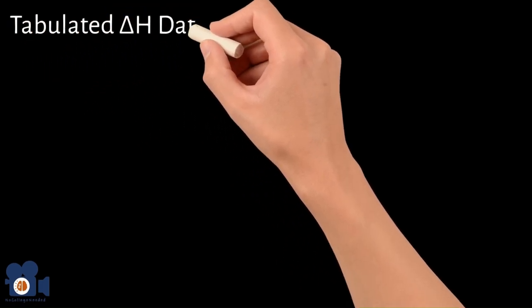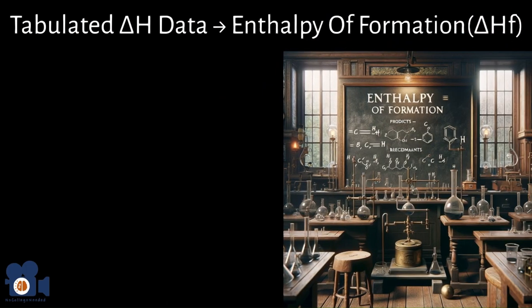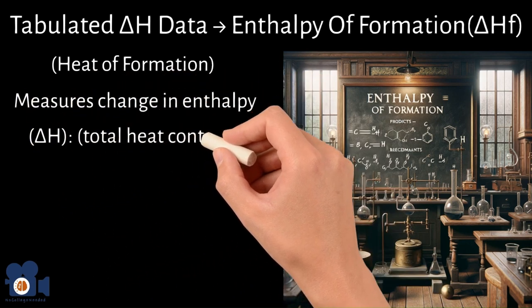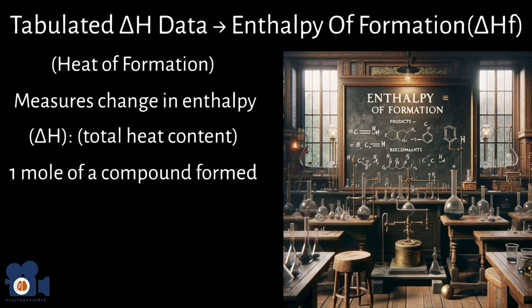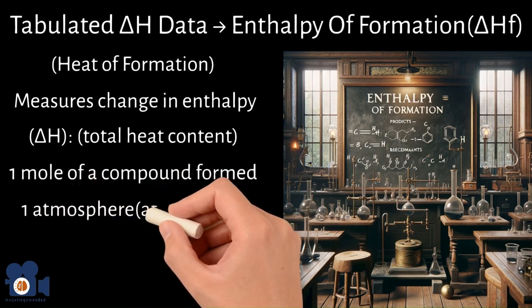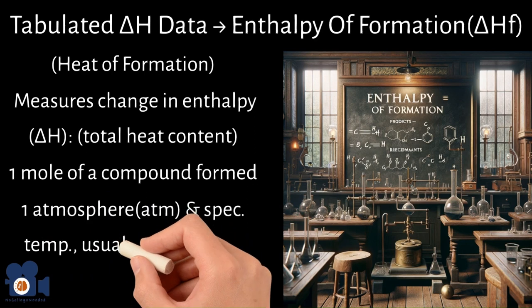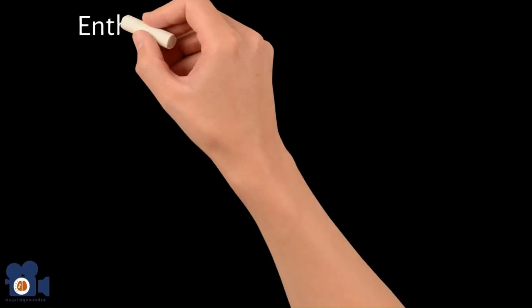The tabulated ΔH values lead to the concept of enthalpy of formation, ΔH_f, often called the heat of formation. Used with Hess's law, this is a powerful tool for scientists. The enthalpy of formation measures the change in enthalpy when one mole of a compound is formed from its constituent elements in their standard states at one atmosphere of pressure and typically 25°C (298 K), where the elements are most stable.